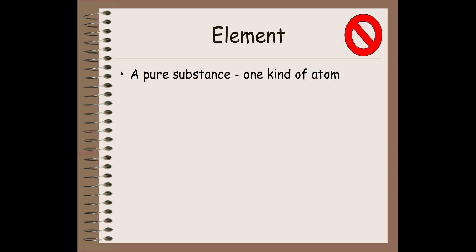Let's talk about elements and remind ourselves what an element is. An element is one of the pure substances — there are two categories of pure substances: elements and compounds. Elements have only one kind of atom. They can be bonded together in a molecule, like O2, H2, P4, or S8 — still one kind of atom bonded together, so it's a pure substance and an element. These cannot be broken down into simpler substances.